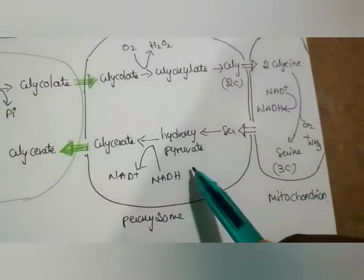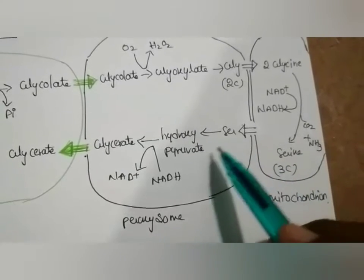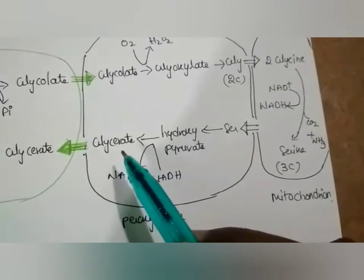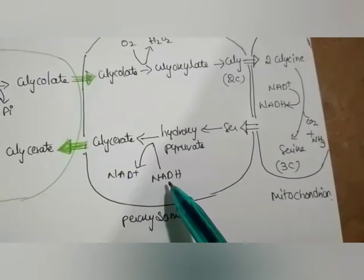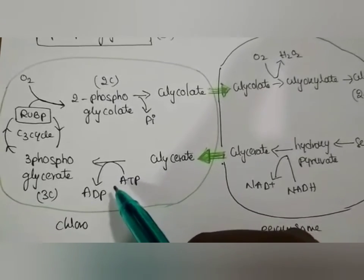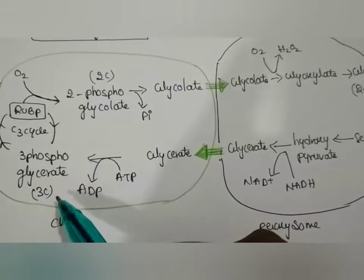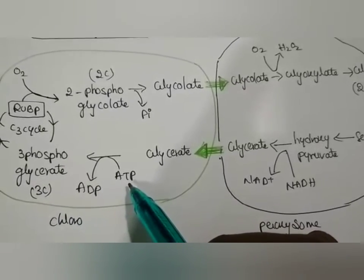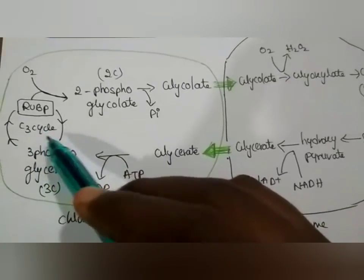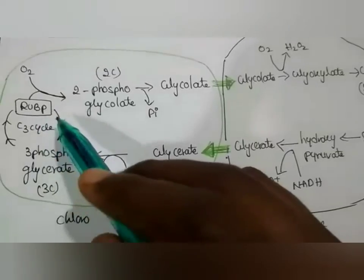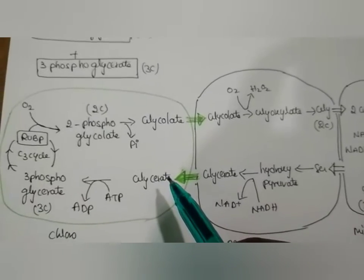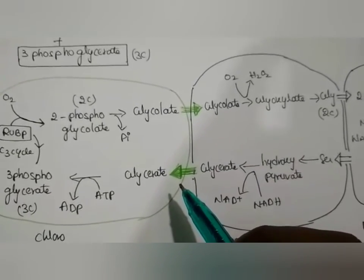Next, serine enters into the peroxisomes, where it is converted into hydroxypyruvate, which is again converted into glycerate with the help of NADH. This glycerate enters into the chloroplast, where it is converted into three phosphoglycerate, a three-carbon compound, with the utilization of ATP energy. This three phosphoglycerate is again entered into the C3 cycle, and RuBP is regenerated. These are the three organelles involved in the C2 cycle.